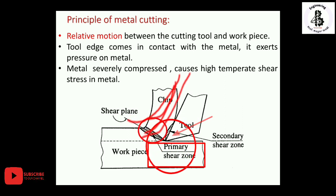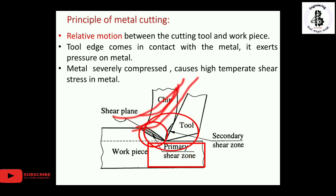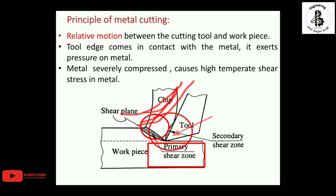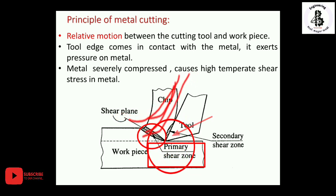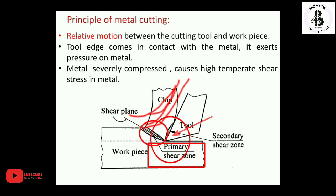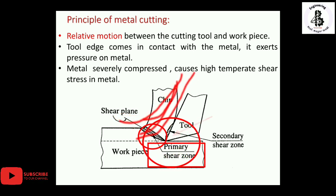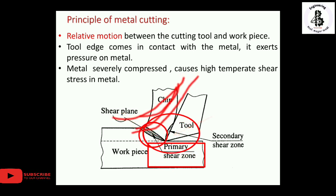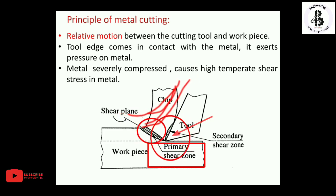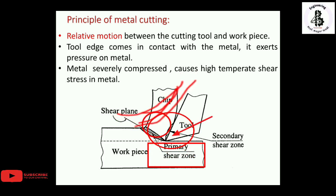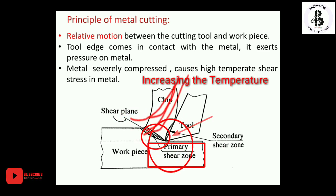Now, the secondary zone. By the application of cutting force, the removed material flows onto the top face of the cutting tool. Due to the continuously flowing chips onto the top surface of the tool, there is a rubbing action. By this friction and continuous chip flow, the temperature increases — this region is represented as the secondary zone during metal cutting.